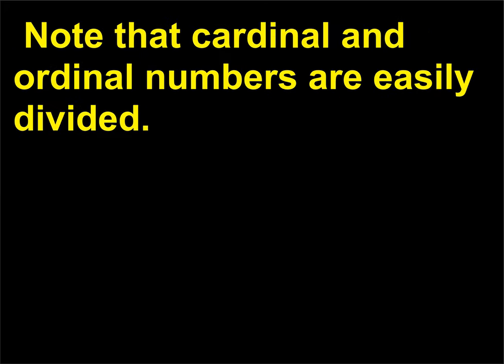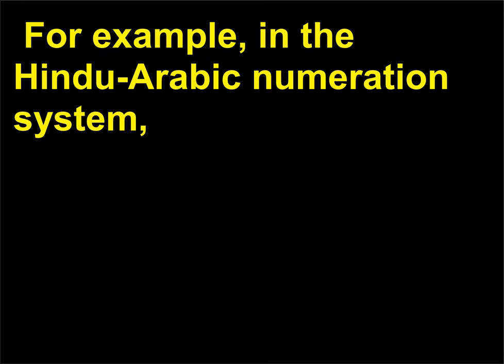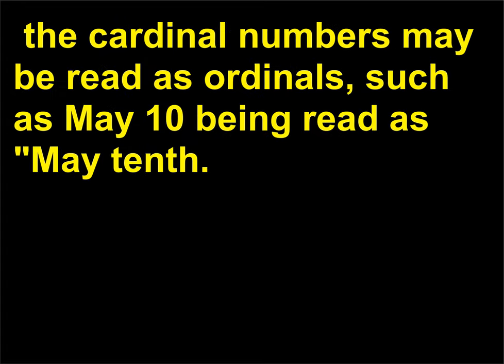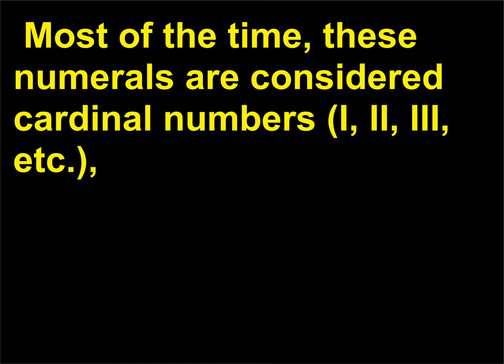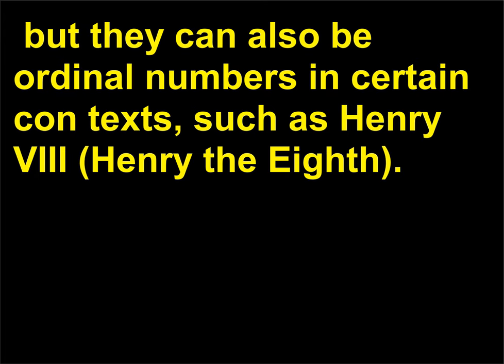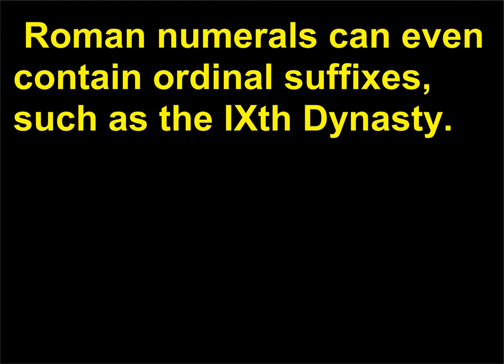Note that cardinal and ordinal numbers are easily divided. For example, in the Hindu-Arabic numeration system, the cardinal numbers may be read as ordinals, such as May 10th being read as May tenth. Such differences are even harder to distinguish when it comes to Roman numerals. Most of the time, these numerals are considered cardinal numbers — I, II, III, etc. — but they can also be ordinal numbers in certain contexts, such as Henry VIII. Roman numerals can even contain ordinal suffixes, such as the IXth dynasty.